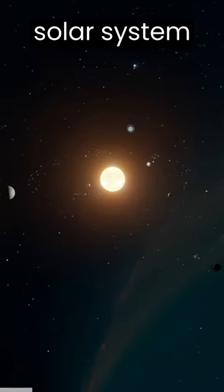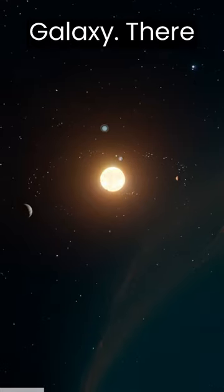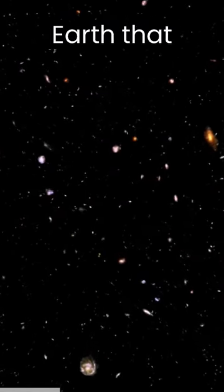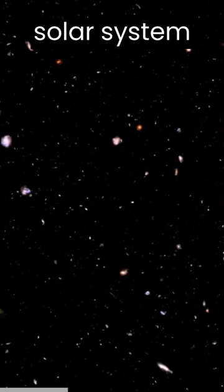But our solar system is not the only solar system in this Milky Way galaxy. There is a solar system 104 light-years away from Earth that forms the most extensive solar system ever seen.